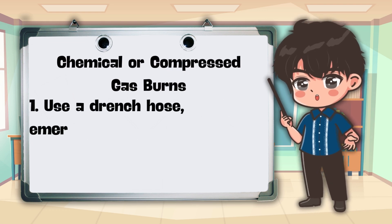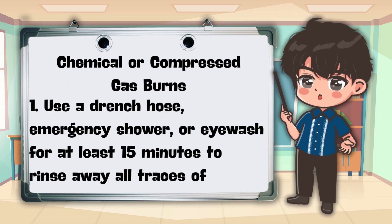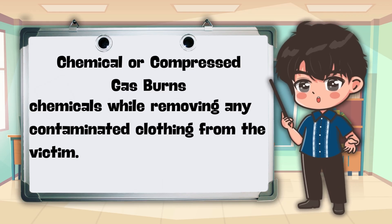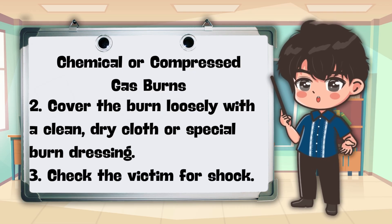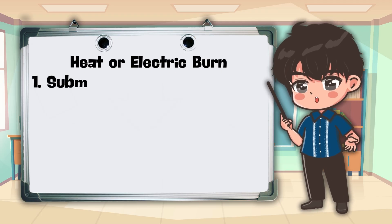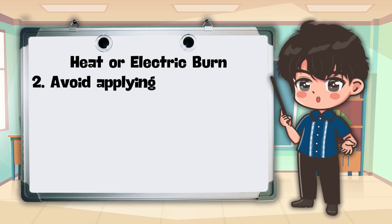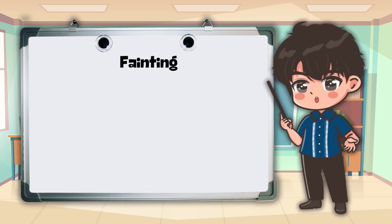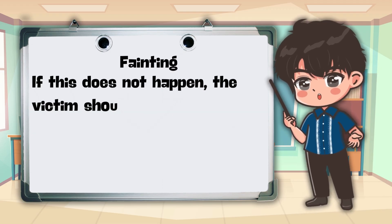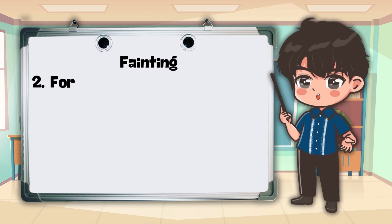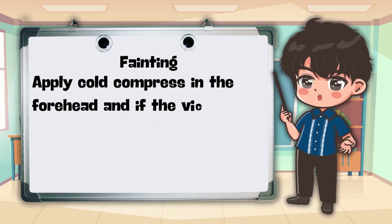For chemical or compressed gas burns: use a drench hose, emergency shower, or eyewash for at least 15 minutes to rinse away all traces of chemicals while removing contaminated clothing from the victim; cover the burn loosely with a clean, dry cloth or special burn dressing; check the victim for shock. For heat or electric burns: submerge the burned area in cold, clean running water if the skin is not seriously affected; avoid applying cream or any form of ointment. For fainting: fainting victims ordinarily regain consciousness shortly after; if this does not happen, bring the victim to the emergency room immediately; for first aid, lay the victim on their back, allow plenty of fresh air, apply cold compress to the forehead, and if the victim vomits, keep the windpipe clear by rolling them to their side.